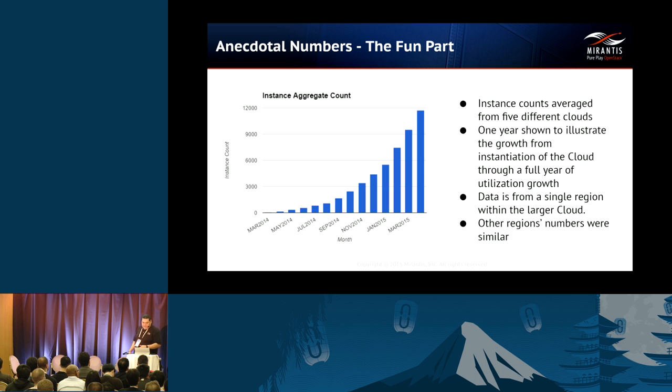As you can see, the chart starts very close to zero and goes all the way up to just shy of 12,000 instances — one region, one zone, one data center.